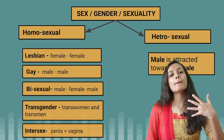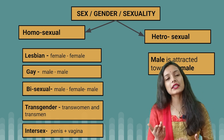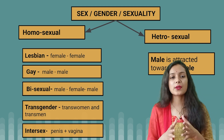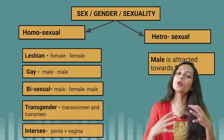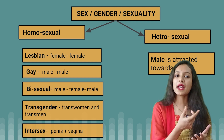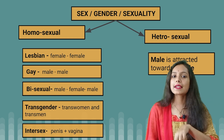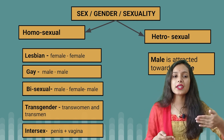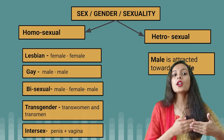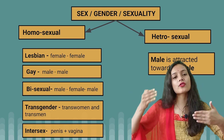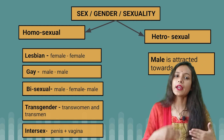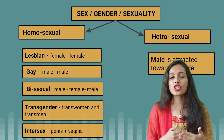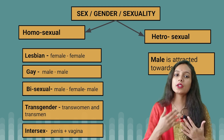Bisexual means that any male or female is attracted to both sexes — both male and female. Now, for L, G, and B, their body structure is the same as a heterosexual male or heterosexual female. But when we talk about transgender or intersex, there are some changes in their body structure, which I will explain in detail.